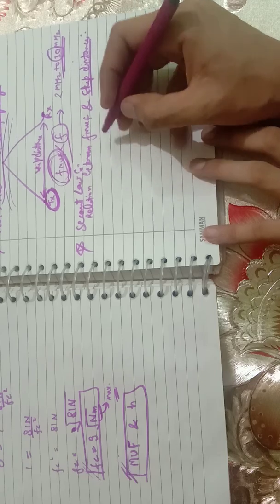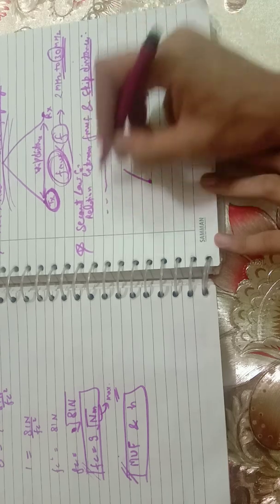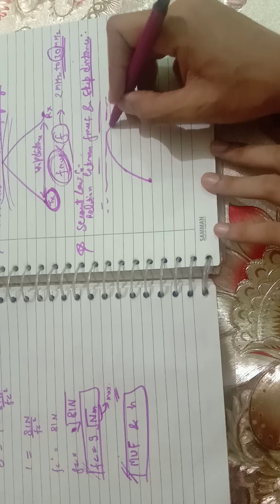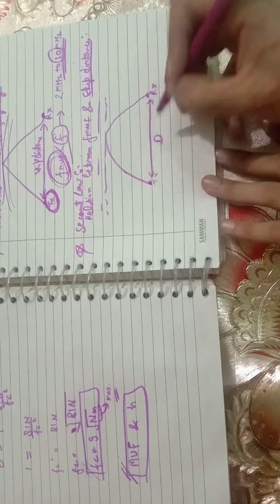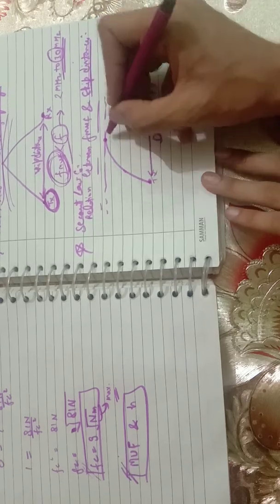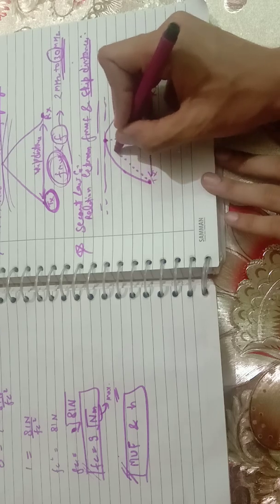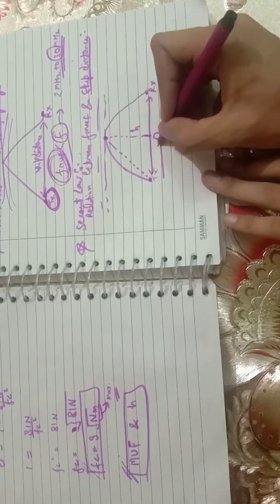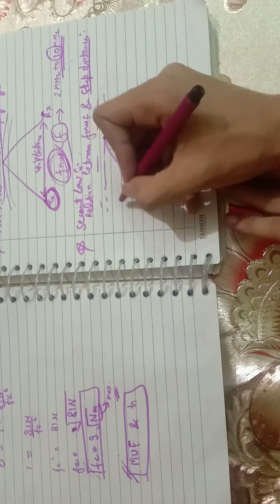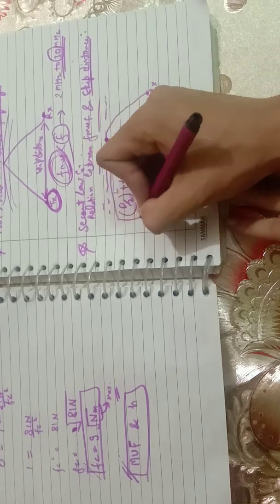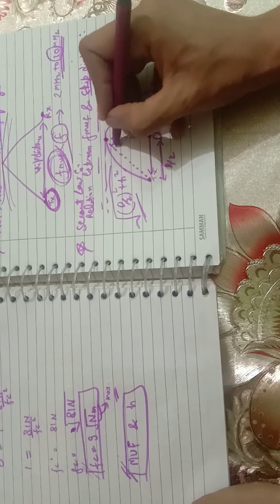I'm drawing a figure: here is the transmitter, here is the receiver, and here is the ionosphere. The signal travels up and gets reflected back to the receiver. The skip distance is labeled as d, and the maximum height of the ionosphere is labeled as h. Drawing from the midpoint, we get d/2. Applying the Pythagorean theorem, the slant distance becomes the square root of (d/2)² + h².